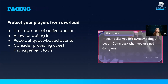No matter how carefully you control difficulty, players could still be overwhelmed if they have too many active quests, or if a new quest line immediately starts after finishing one. They need a break sometimes, especially if completing quests isn't the whole point of your game. You can help by limiting the number of active quests at a given time, or by allowing players to decide when to start a new quest, and by pacing quest-based events so players have time to recover. Also consider providing quest management tools that let players hide or delete quests they're not interested in.